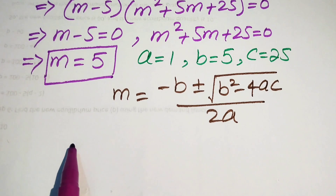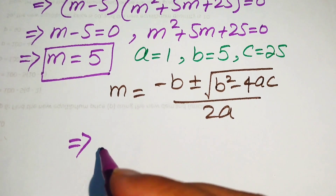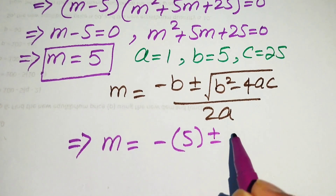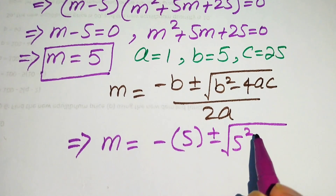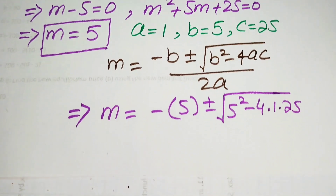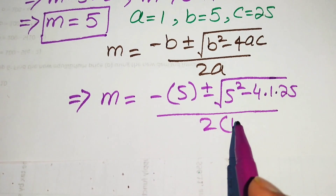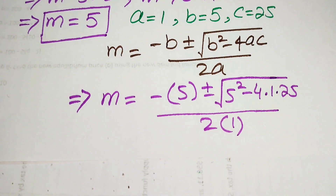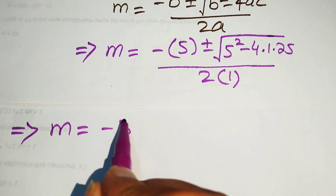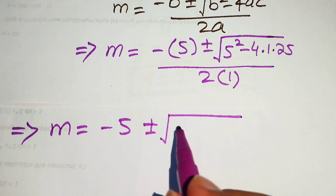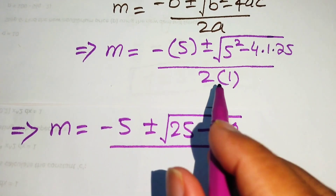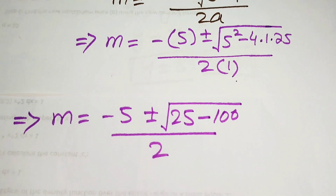We substitute the coefficients: a equals 1, b equals 5, c equals 25. This gives m equals negative 5 plus or minus the square root of (5 squared minus 4 times 1 times 25), divided by 2 times 1. That simplifies to negative 5 plus or minus the square root of (25 minus 100), divided by 2.